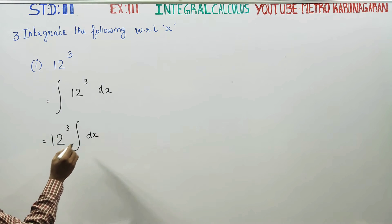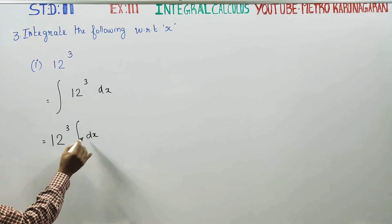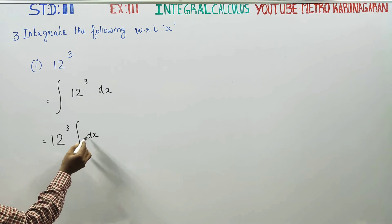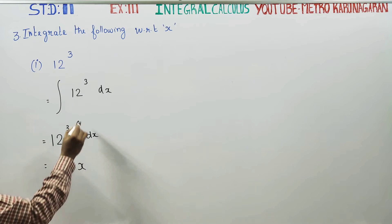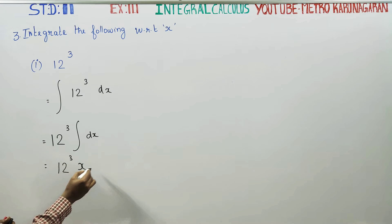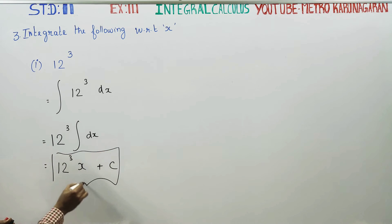Integration of dx - this is my integral, this is my differentiation. Integration and differentiation are opposite, this is my cancel out. If you have to remember, integration of dx is x. This is my final answer.